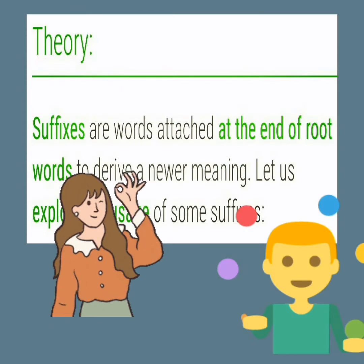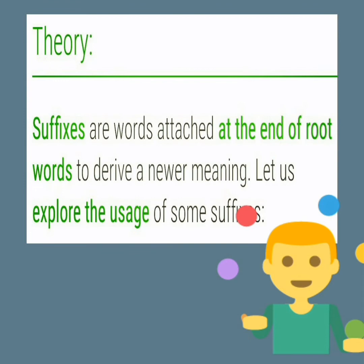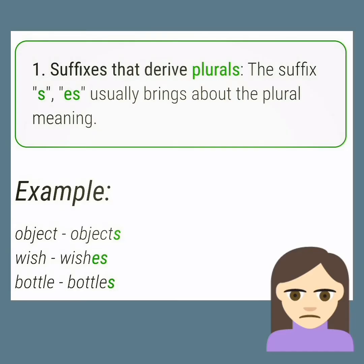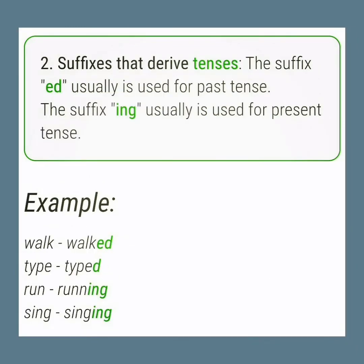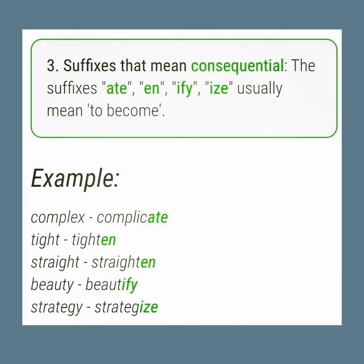I hope you understand prefixes. Now let's see about suffixes. Suffixes are words attached at the end of root words to derive a new meaning. Let us explore the usage of some suffixes. Suffixes that derive plurals: the suffix -s or -es usually brings about the plural meaning. Examples: object → objects, wish → wishes, bottle → bottles. Suffixes that derive tenses: the suffix -ed is used for past tense, and -ing is used for present tense. Examples: walk → walked, type → typed, run → running, sing → singing.